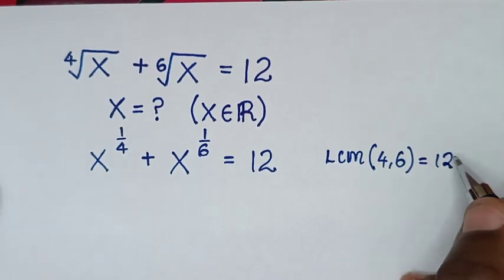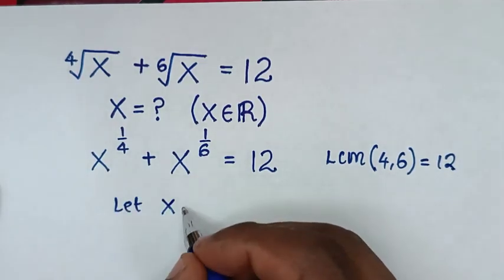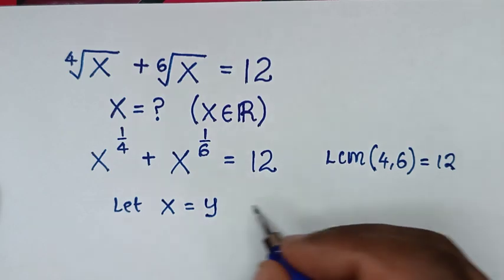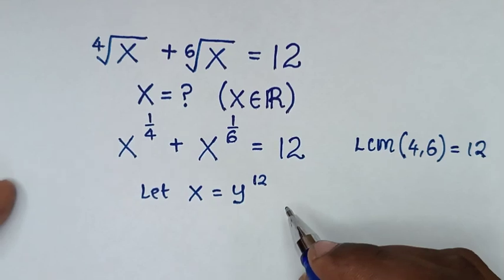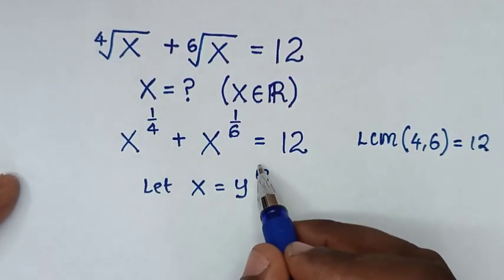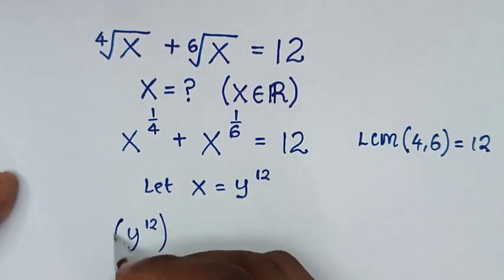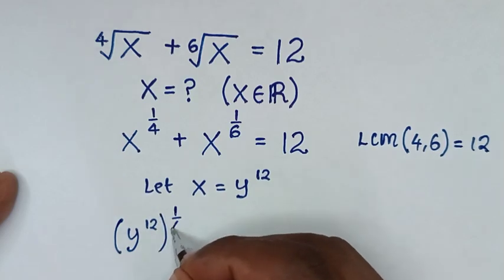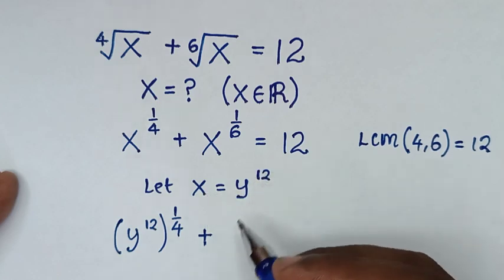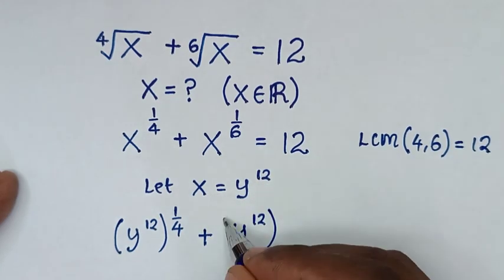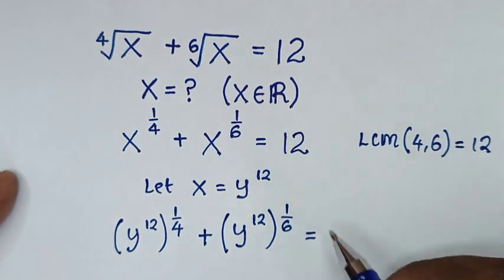Then we'll let x equal to y to the power of 12, so as to remove these fractions into whole numbers. If we substitute x as y to the power of 12, it becomes y to the power of 12, bracket to the power of 1 over 4, plus y to the power of 12, bracket to the power of 1 over 6, is equal to 12.